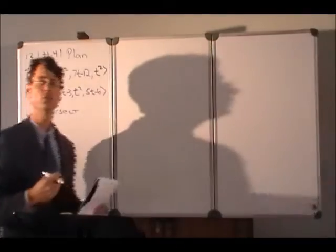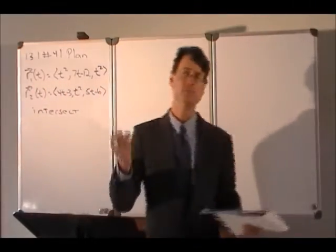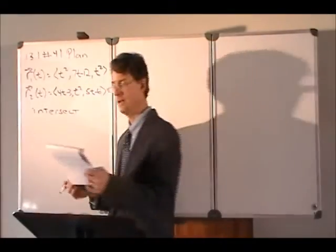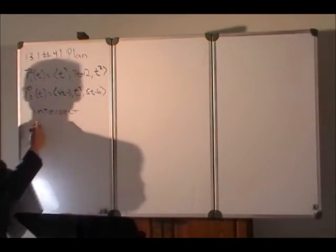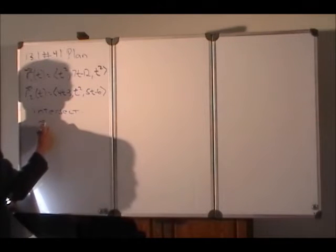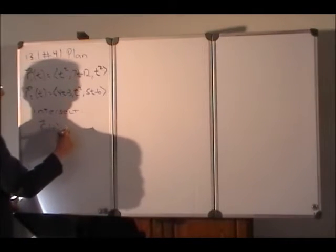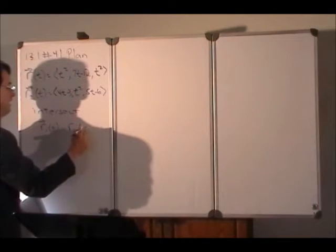Intersection means that the two curves cross each other, but maybe not at the same time. And the way that we would solve the problem if it had asked about intersection is we would set R1 of t equal to R2 of s.